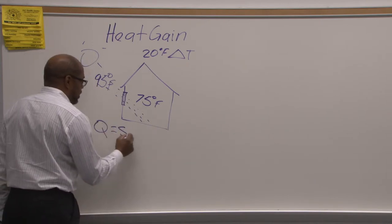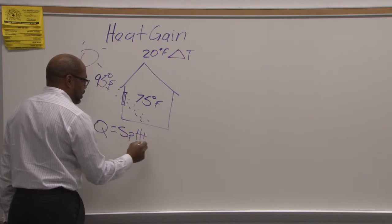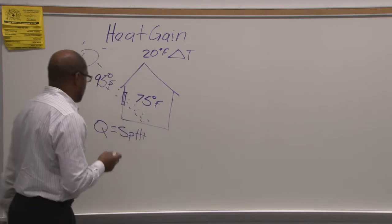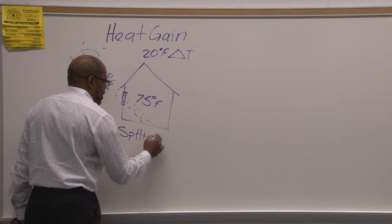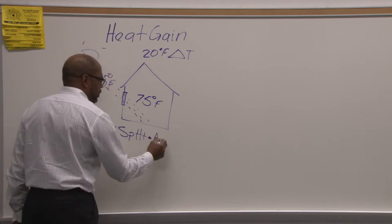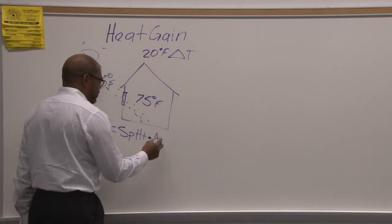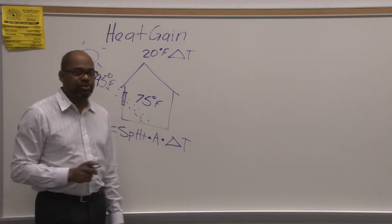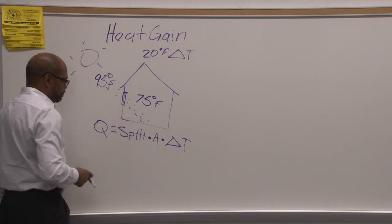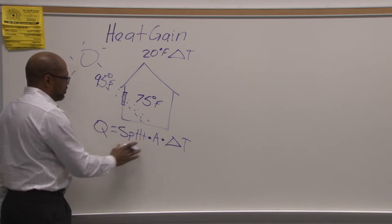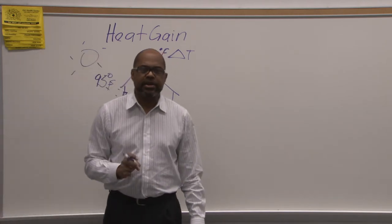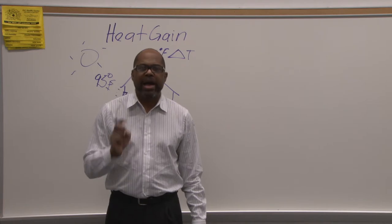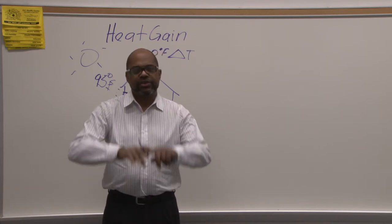Specific heat is a number that is based on how heat transferred through the material based on its weight and volume, times the area of the material, which is the square feet or square inches, times its delta T, which is the temperature difference between inside and outside of the material. The specific heat is the amount of heat a substance can absorb or increase the temperature by one degree for every pound of that material or its square feet of that area.